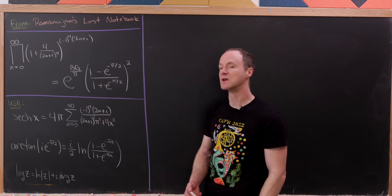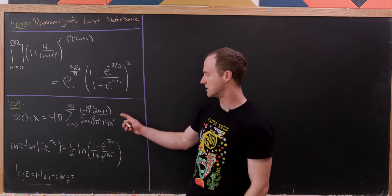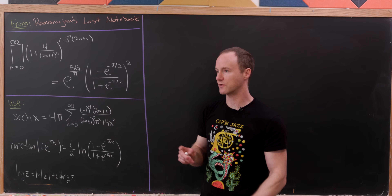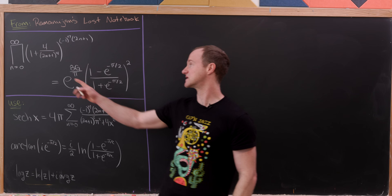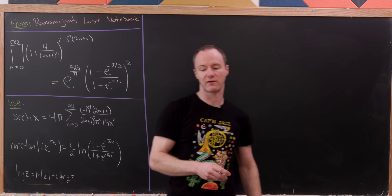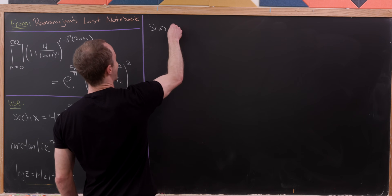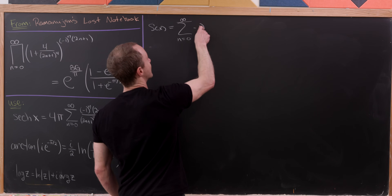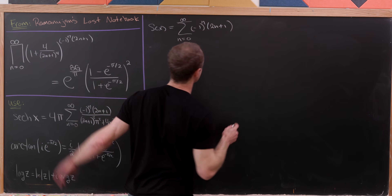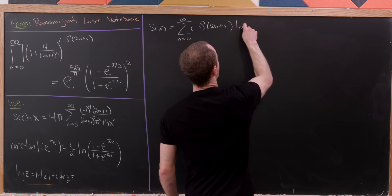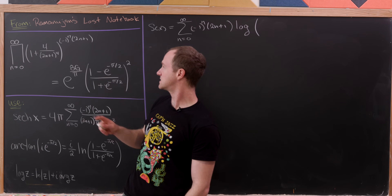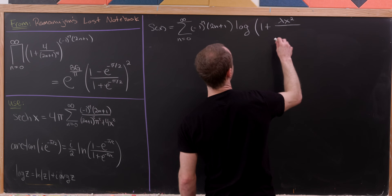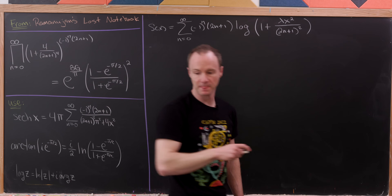There are a lot of moving parts. Notice that many of these tools look like we've taken a logarithm of the product identity — and that's in fact how we'll proceed. We look at a sum version, essentially the logarithm of a product. Define s(x) as the sum from n=0 to infinity of (-1)^n times (2n+1) times the log of [1 plus lambda*x^2 over (2n+1)^2], where x is in [0, infinity) and lambda is a complex number.